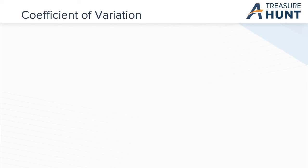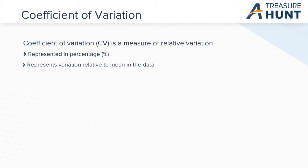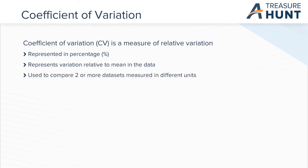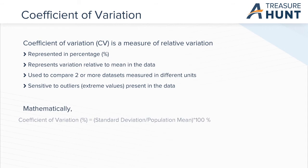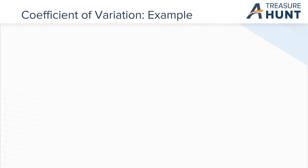Let us now talk about coefficient of variation. Coefficient of variation, or CV, is a measure of relative variation. It is represented in percentage. It represents variation relative to mean in the data. It is used to compare two or more sets of data measured in different units. This measure is sensitive to outliers or extreme values present in the data. Coefficient of variation is equal to standard deviation divided by the population mean times 100%.